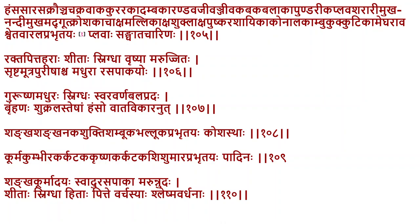Koshastha animals — shankha, shankhanaka, shukti, shambuka, bhalluka — these are different varieties of mollusks with shells. Shambuka, bhalluka etc. are all varieties of mollusks.